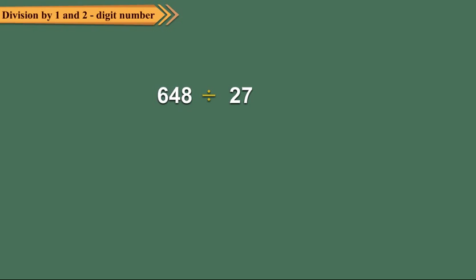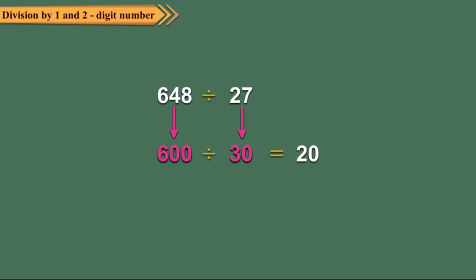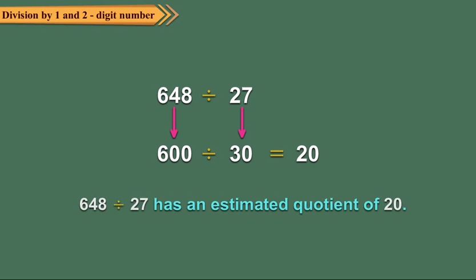Estimate the quotient for 648 divided by 27. 648 is rounded to 600 and 27 is rounded to 30, so the division becomes 600 divided by 30. To solve 600 divided by 30, think of 60 divided by 3. Since 60 divided by 3 equals 20, 600 divided by 30 is equal to 20. So 648 divided by 27 gives 20 as an estimated quotient.